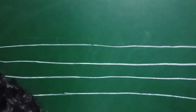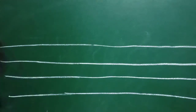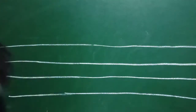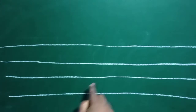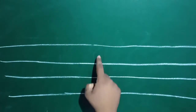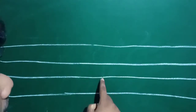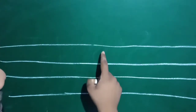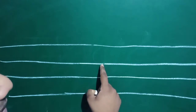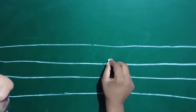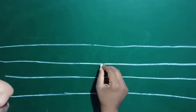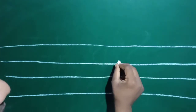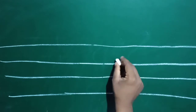For the capital letter J, we have to start writing from the second line. 1, 2, 3, 4 — this is the second line. Capital letter J starts from here.